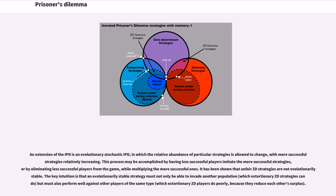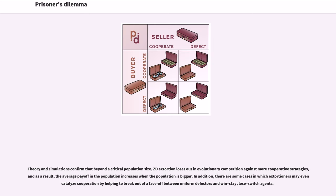An extension of the IPD is an evolutionary stochastic IPD, in which the relative abundance of particular strategies is allowed to change, with more successful strategies relatively increasing. This process may be accomplished by having less successful players imitate the more successful strategies, or by eliminating less successful players from the game while multiplying the more successful ones. It has been shown that unfair ZD strategies are not evolutionarily stable. The key intuition is that an evolutionarily stable strategy must not only be able to invade another population but must also perform well against other players of the same type. The theory and simulations confirm that beyond a critical population size, ZD extortion loses out in evolutionary competition against more cooperative strategies, and as a result, the average payoff in the population increases when the population is bigger.